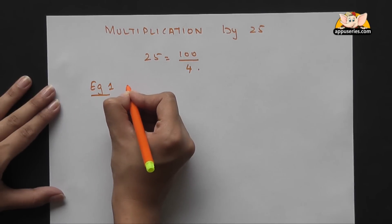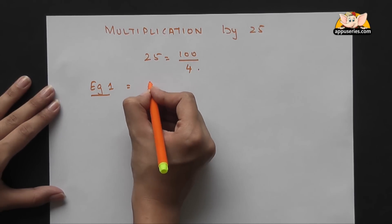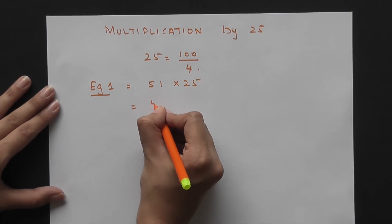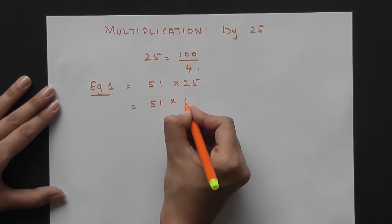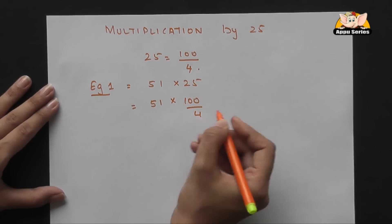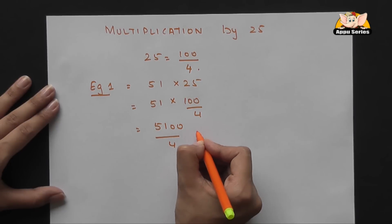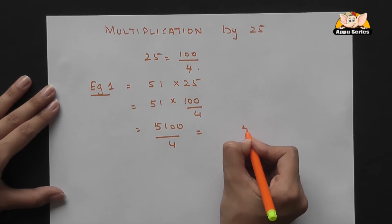We will take an example of 51 into 25, which is 51 into 100 by 4. That is 5100 by 4. This gives you 1, 2, 7, 5.